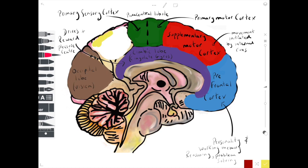At the back of the brain we have the occipital lobe which receives information from the visual system coming from the lateral geniculate nucleus of the thalamus.